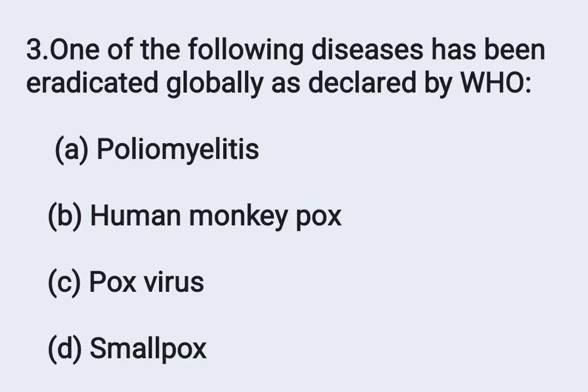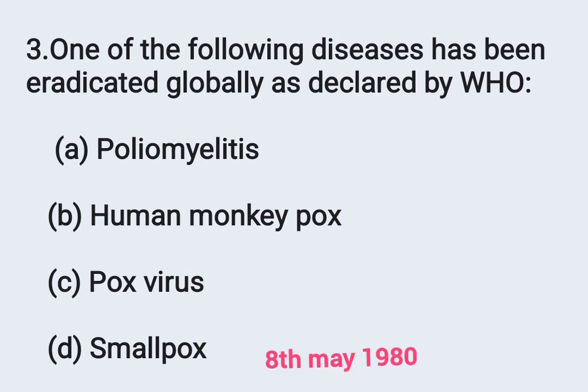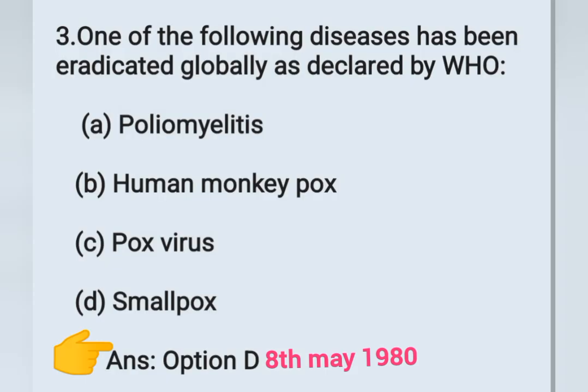Next question: Which of the following diseases has been eradicated globally as declared by WHO? Option A: poliomyelitis, Option B: human monkeypox, Option C: pox virus, Option D: smallpox. WHO declared the global eradication of smallpox in the year 1980, specifically on 8th May 1980. So the correct answer is Option D: smallpox.